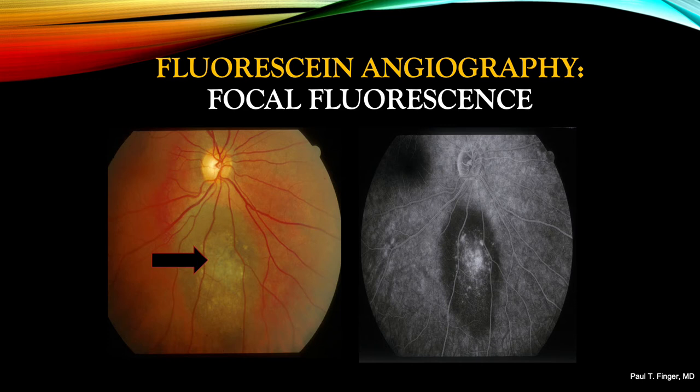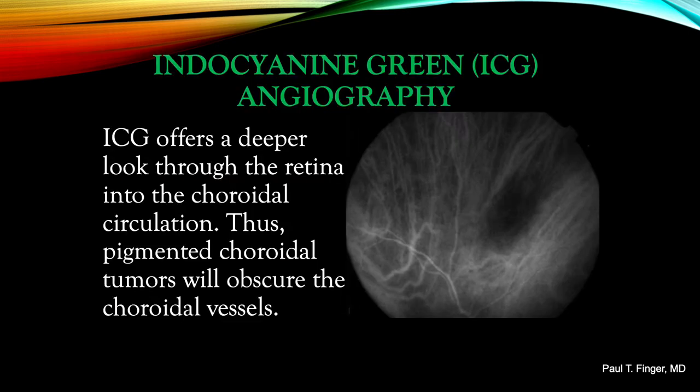Clinically, on optical coherence tomography and fundus autofluorescent imaging, these factors are more easily seen. Another intraocular angiographic technique is indocyanine green, or ICG. It offers a deeper look through the retina into the choroid. However, pigmented tumors will also block ICG fluorescence. Certain tumors — for example, metastatic choroidal tumors — have poorly formed blood vessels, and thus poorly perfuse even with ICG angiography, and appear hypofluorescent.